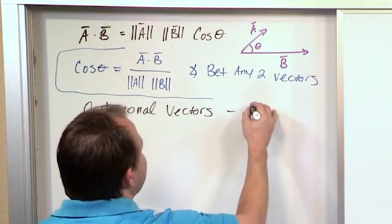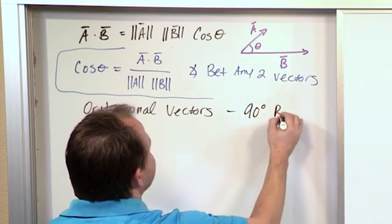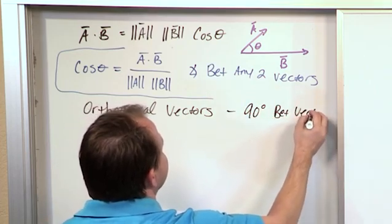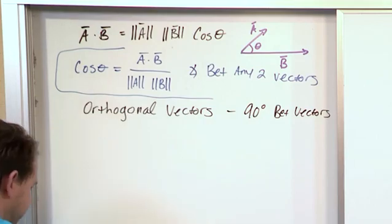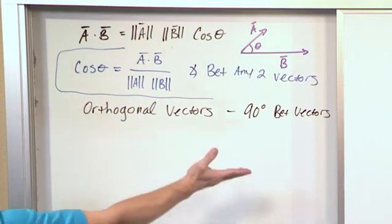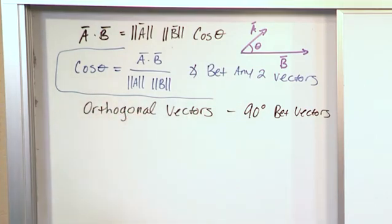So orthogonal vectors, I'll just say here, is 90 degrees between vectors. That's the concept of orthogonality. You could replace this word with perpendicular, or 90 degrees, and then it would basically be the same thing.